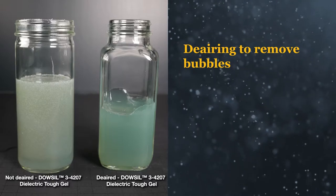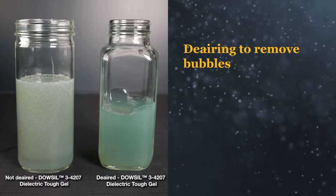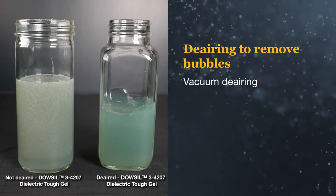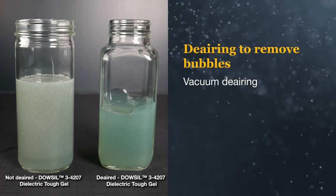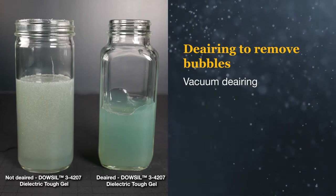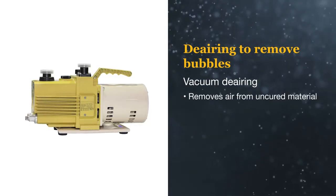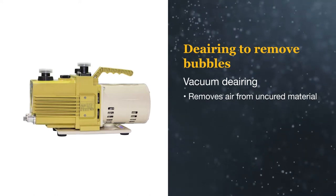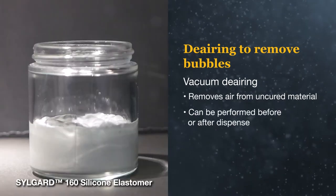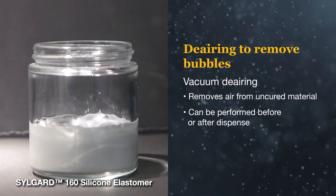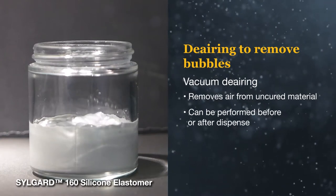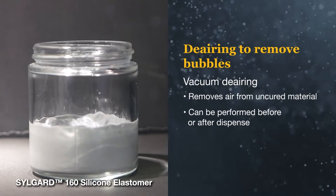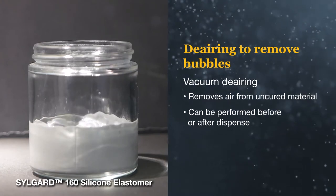When you cannot eliminate the sources of bubbles before or during dispense, you may need to use vacuum de-airing to remove them before curing. Vacuum de-airing is the process of using a vacuum system to reduce air pressure in a chamber. When uncured products are placed in this low pressure chamber, bubbles migrate out of the product. This process can be simple, but there are a few considerations.